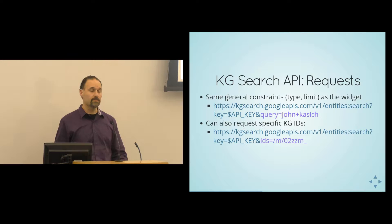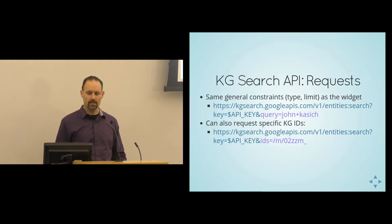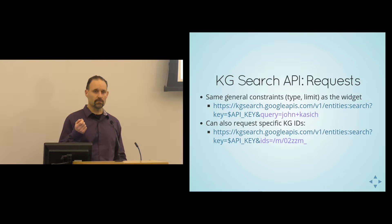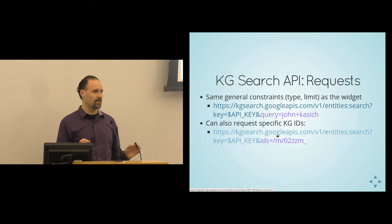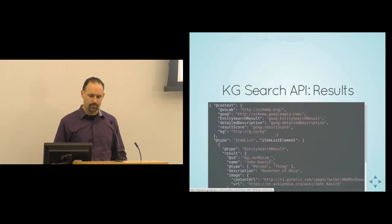There's a Search API as well, which is probably more useful, because you don't have a prepackaged widget — you can do whatever you want server-side, with the same constraints. You can constrain the Search API to specific schema.org types: search just for books, people, organizations, or locations. You can also look up specific Knowledge Graph IDs — in this case, M02ZZM_ is the identifier for John Kasich, governor of Ohio. The results from the Knowledge Graph Search API are much richer than the widget: we get JSON back with an item list of results.